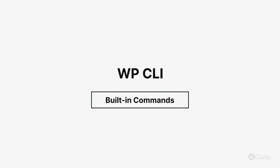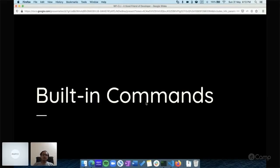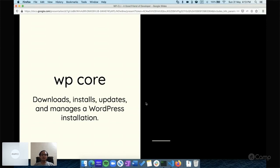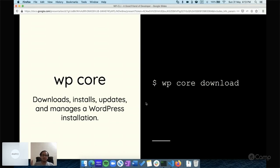Hello friends, welcome back! Let's talk about the built-in WP-CLI commands, and I'll also show you some practical demos to create and install a site right from the terminal without touching the browser. First, we'll talk about `wp core`. You can use this command to download, install, and manage WordPress. For example, running `wp core download` will download the latest version of WordPress. If you want a specific version, just pass the `--version` parameter.